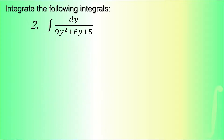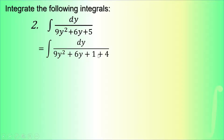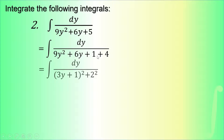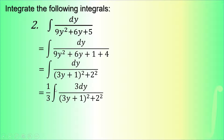The second example is the integral of dy over (9y² + 6y + 5). We need to identify u and a on our denominator. We separate the constant 5 into 1 and 4 so that the trinomial can be converted into a perfect square. That perfect square is (3y + 1)², and 4 is 2². Differentiating u = 3y + 1 gives 3 dy, so we put 3 on the numerator and multiply one-third outside the integral.